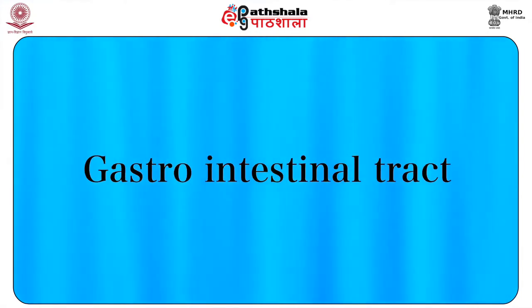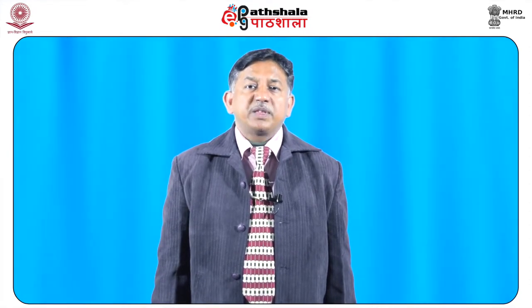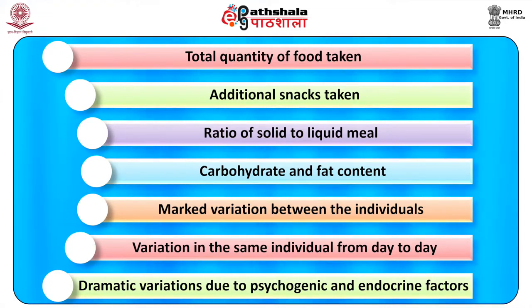Regarding changes in the GI tract: the amount of stomach contents and the extent of digestion may help estimate time since death if the approximate time of the last meal is known. The state of digestion and transport of food from the stomach to the duodenum is variable and depends on anatomical, physiological, pathological, and psychological factors, including the total quantity of food taken, additional snacks, ratio of solid to liquid, carbohydrate and fat content, individual variation, and variation from day to day due to psychogenic and endocrine factors.